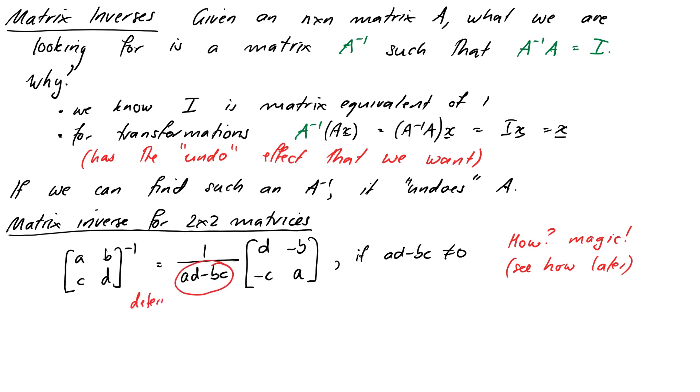One little quick note before we do that though, that number ad - bc, that is called the determinant of the matrix and we require that it is non-zero in order to have an inverse because otherwise we'd be dividing by 0. And we can define determinants later on in the course for bigger matrices but just a little note so this is the first time we've seen one of these.